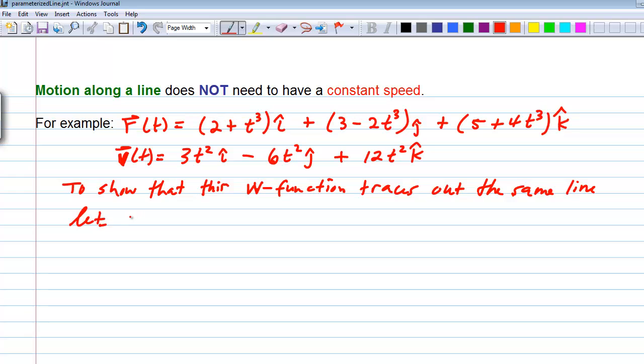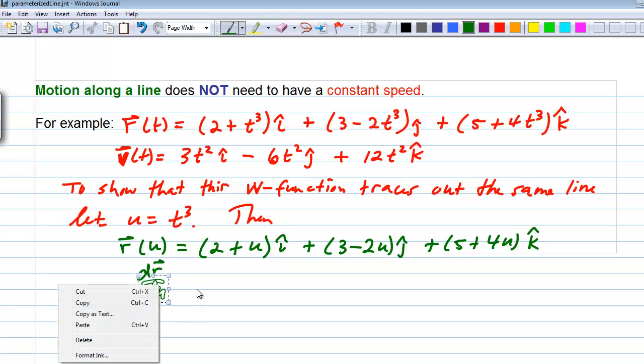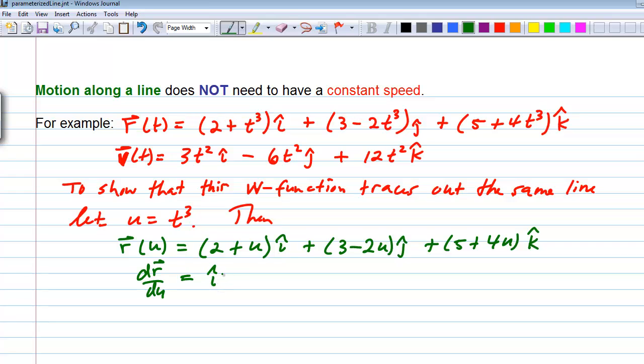To show on paper that this vector-valued function traces out the same line, let's let u be equal to t cubed. Then, r of u will equal 2 plus u i plus 3 minus 2u j, plus 5 plus 4u k. And if we took dr du, we would get i minus 2j plus 4k, which is the direction vector of our line, and constant it seems, at least at this point, speed with respect to u.